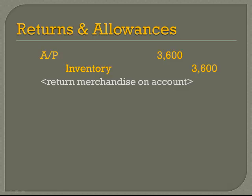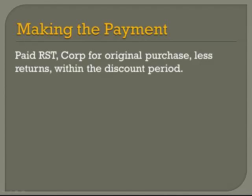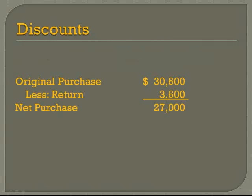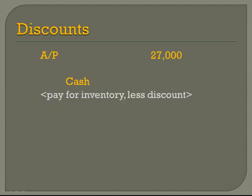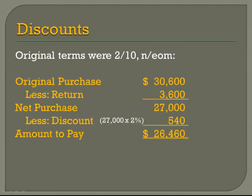After a few more days, we decide to pay off this account. We pay for the original purchase less the returns, and we're still within the discount period. We need to know what amount we owe, because this is the amount that will go away after we write the check. We originally purchased $30,600, we returned some, so our net purchase is only $27,000. The accounts payable that has to go down is $27,000. The original terms were 2/10, so we get a 2% discount if paid within 10 days. We subtract out the discount of $540, which is 2% of the amount we owe, leaving us writing a check for $26,460.